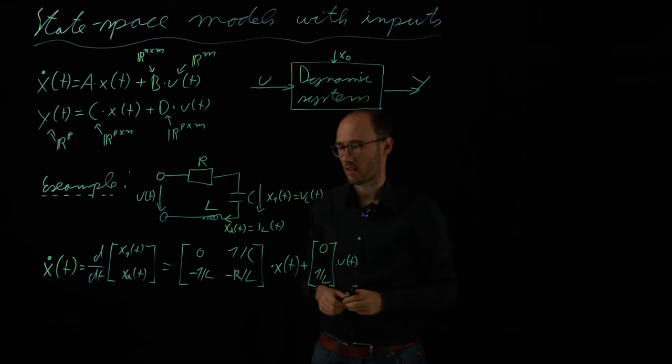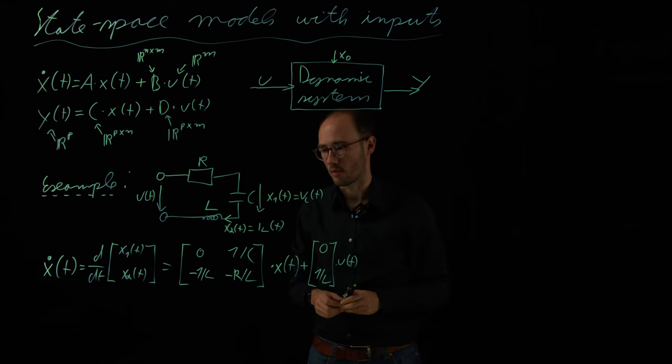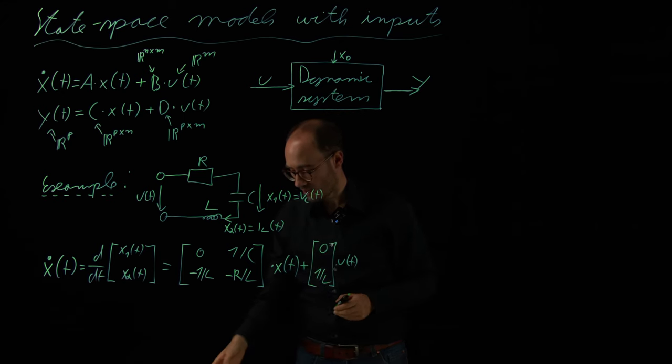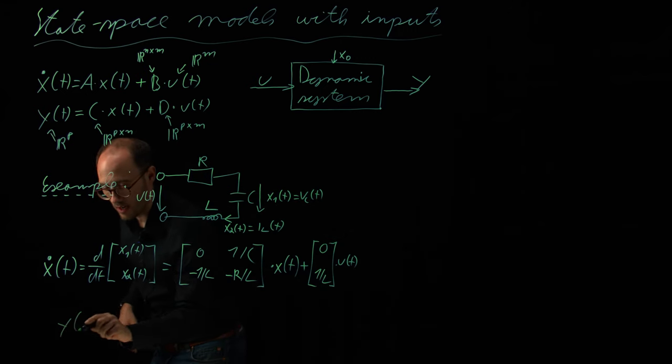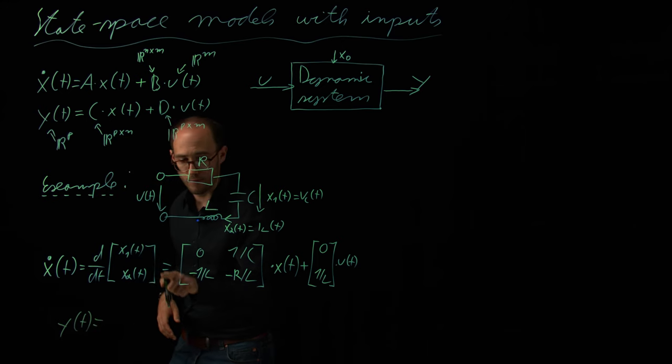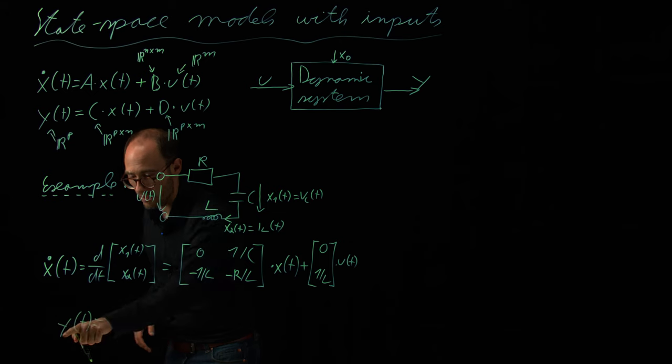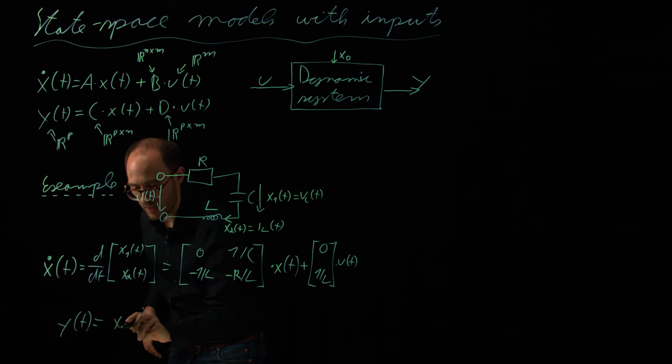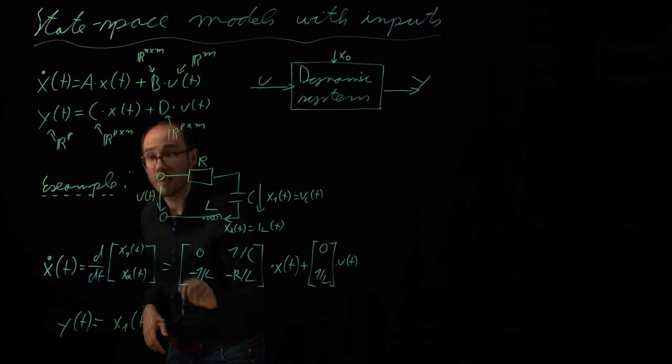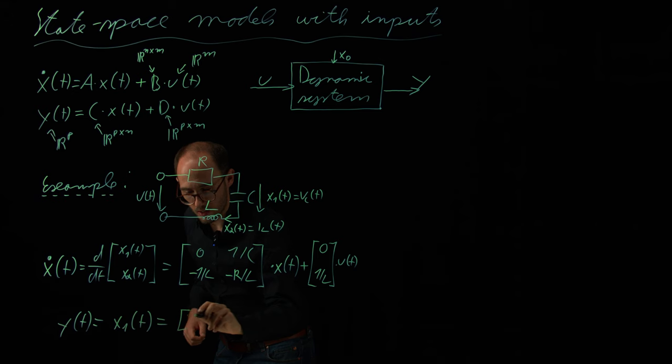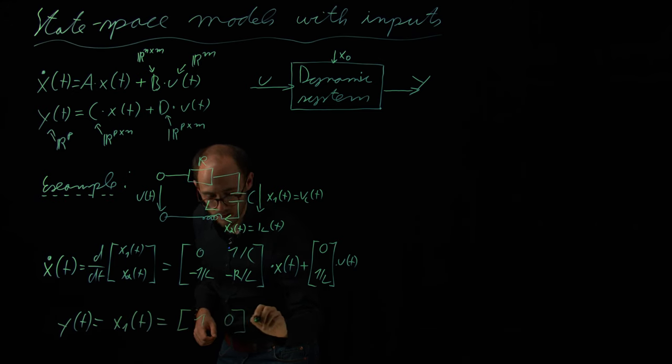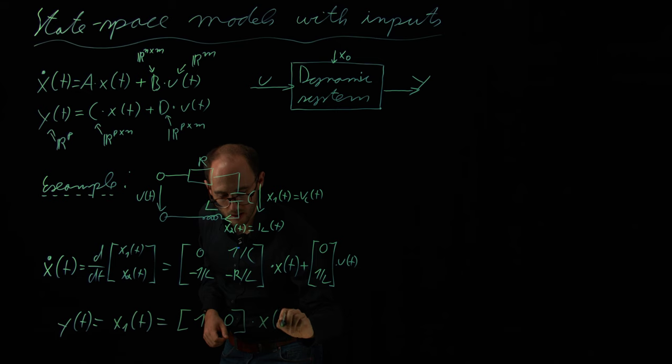Question is now, what can we measure? What are the interesting quantities here? We have basically two opportunities. We could measure the voltage at the capacitor or we could measure the current through the inductor. And more or less arbitrarily, I decide that today I would like to measure the voltage at the capacitor. So, I consider y of t being identical to x1 of t. And if we denote this in this linear state space equation, what we basically get is 1, 0 times x of t.